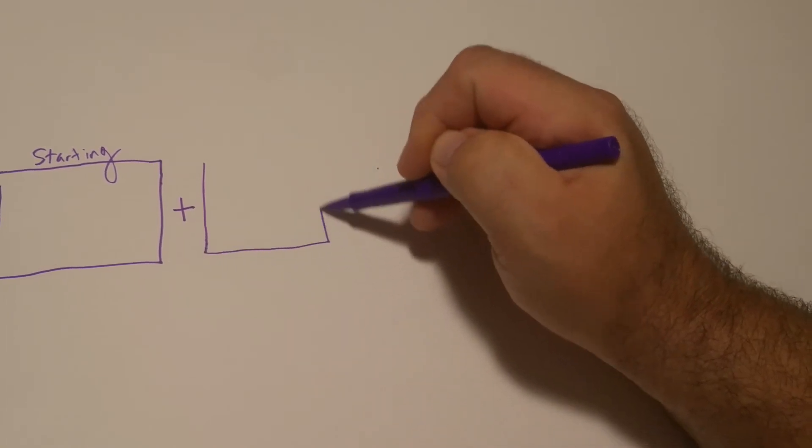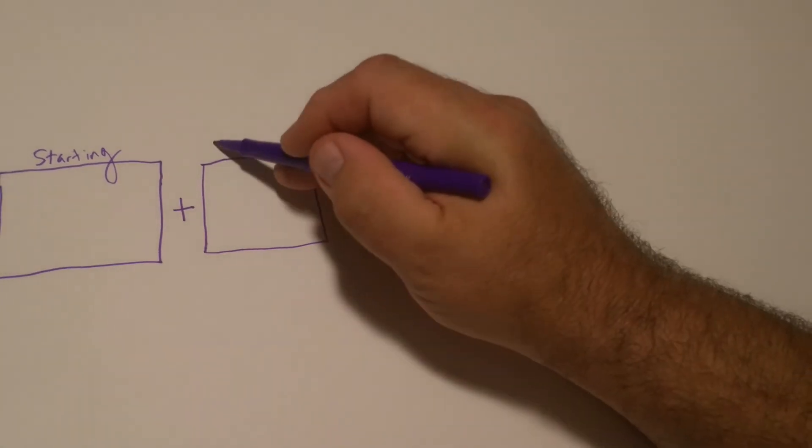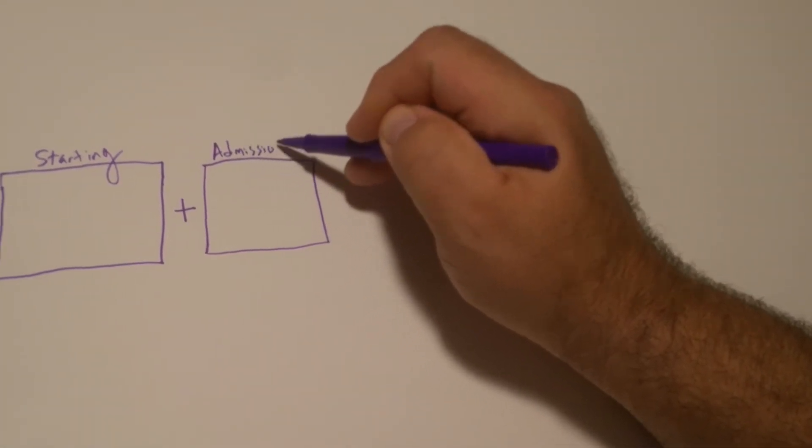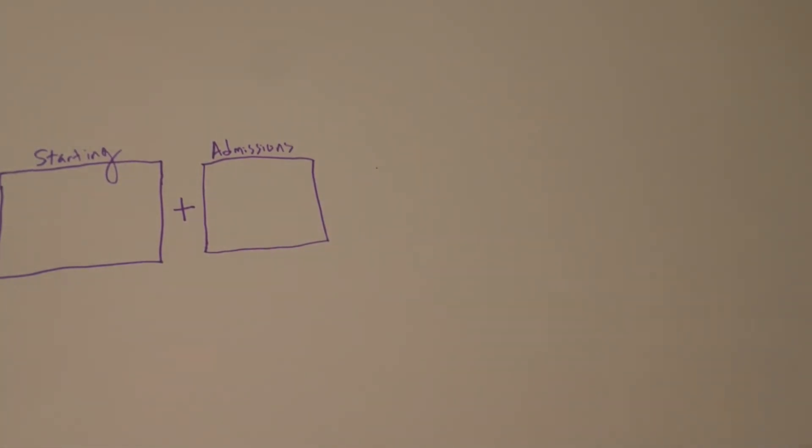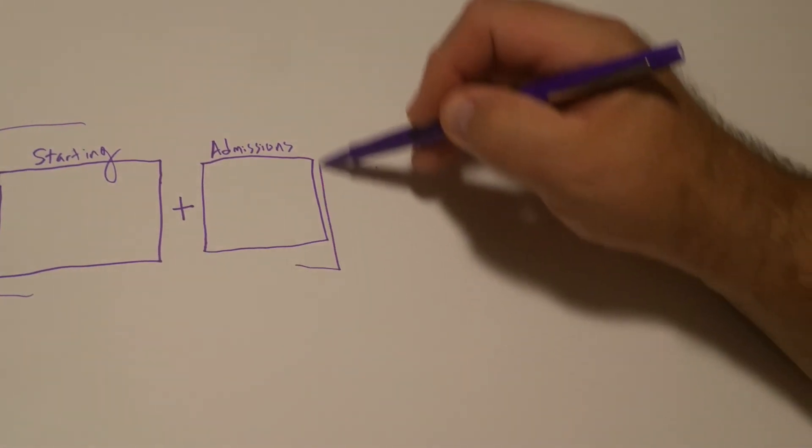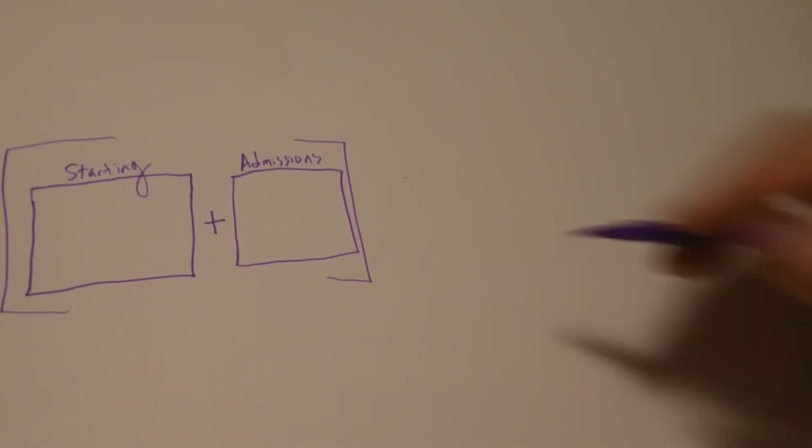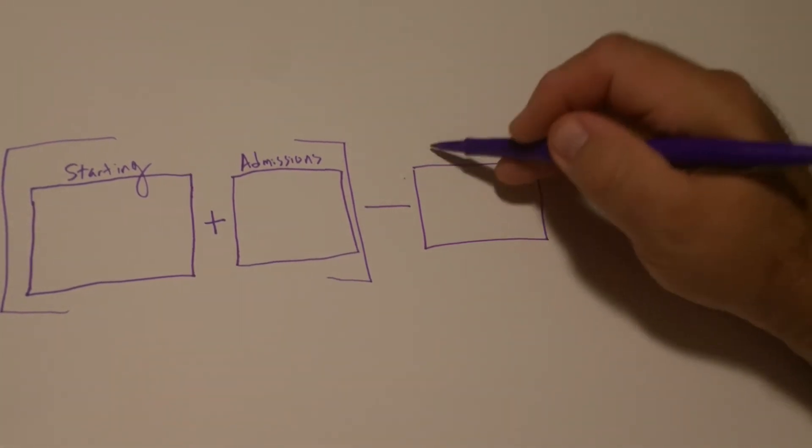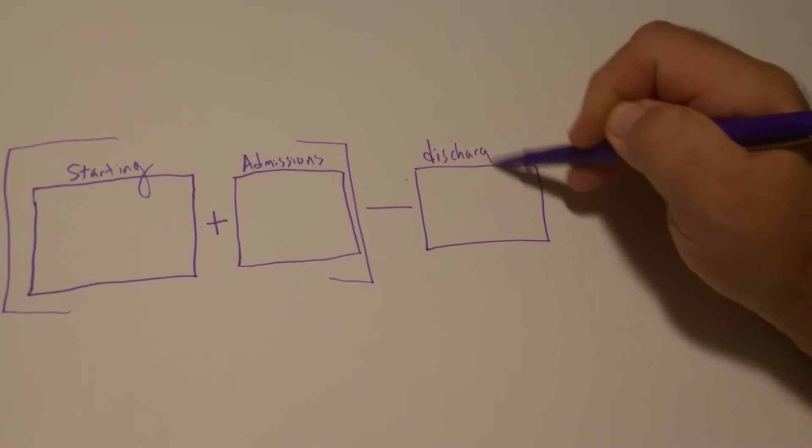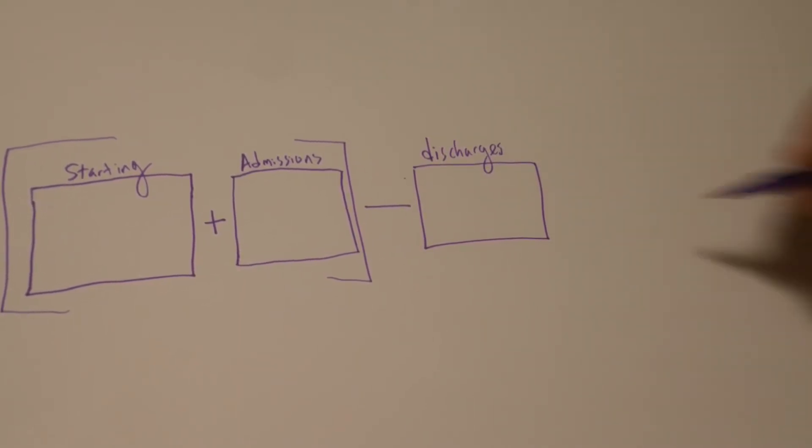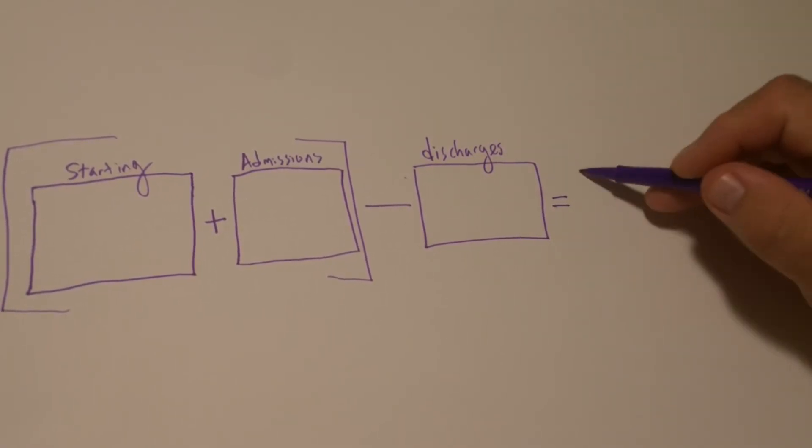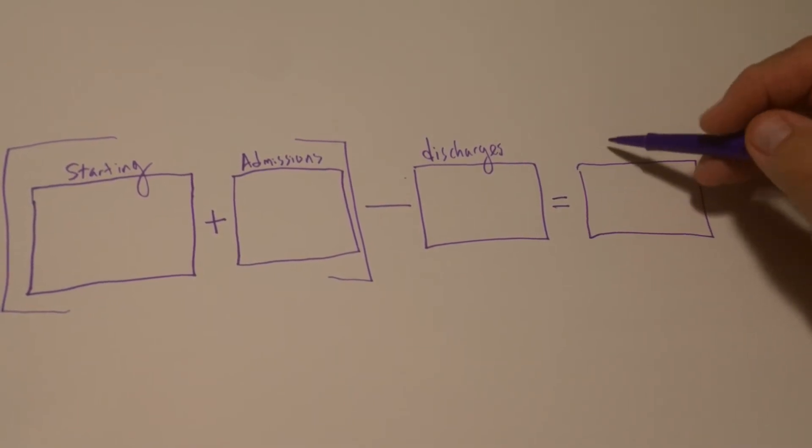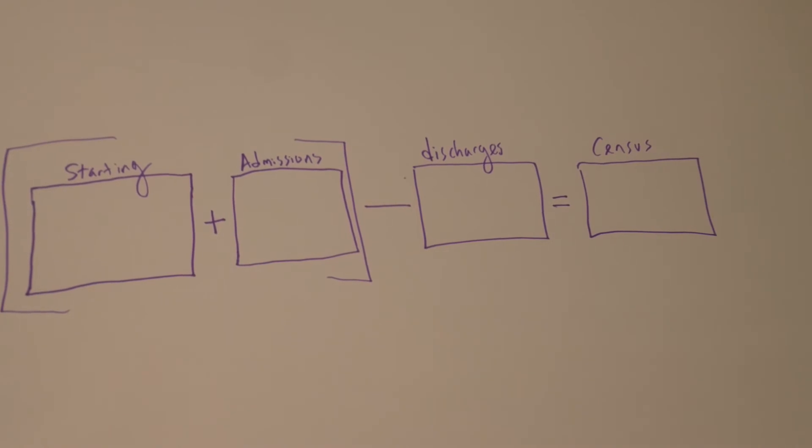I'm going to have a second box here. To that, we're going to add our admissions. And we talked about doing this all together. So, I'm going to put some parentheses around that. So, you can see that we're going to work that direction. And then, from that, I'm going to subtract... And I'm going to use another box here. I'm going to subtract any discharges, including any deaths. And that, using the formula, is going to ultimately give me the census. In this case, we're looking for the census at 11:59 PM on August 31st.